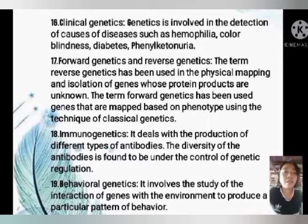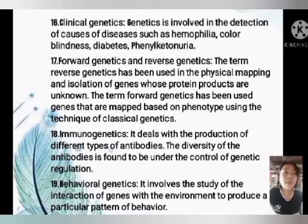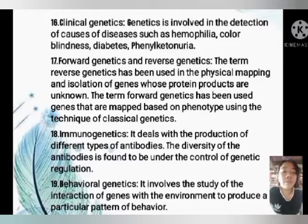Number 17, forward genetics and reverse genetics. The term reverse genetics has been used in the physical mapping and isolation of genes whose protein products are unknown. The term forward genetics refers to genes that are mapped based on the phenotype using the technique of classical genetics. Forward genetics identifies and links mutations to an observed disease etiology, while reverse genetics induces mutations in model organisms to study their role in disease.